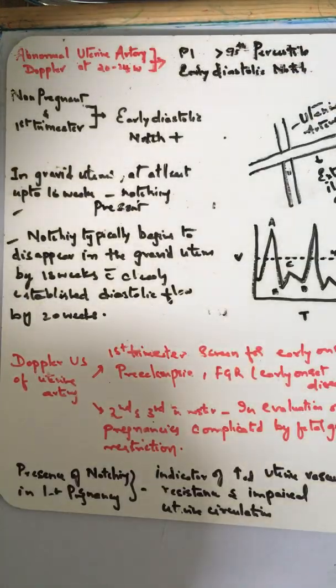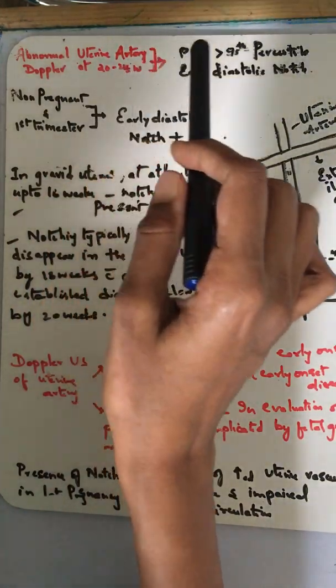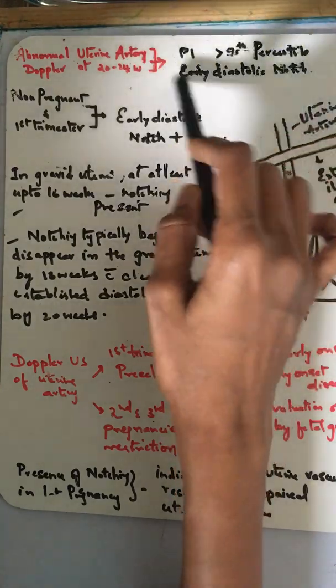When you call it an abnormal uterine artery Doppler, especially when patients come during second trimester, look at the PI—it will be more than the 95th percentile and there will also be a diastolic notch.